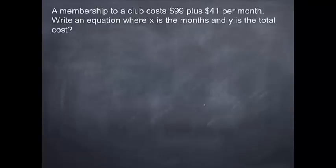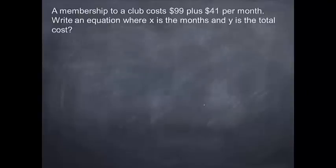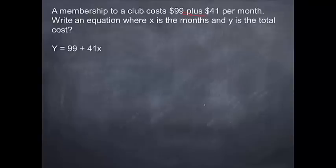A membership to a club costs $99 plus $41 per month. We are going to write an equation where x is the month and y is the total cost. Go ahead and try to write this one out on your own. If you got y equals $99 plus $41 times x, you are on the right track. Y is always going to be where the equals sign is. Y equals $99 plus — hint — $41 per month. When it says 'per,' we are multiplying. So 41 times x, where x is the month.